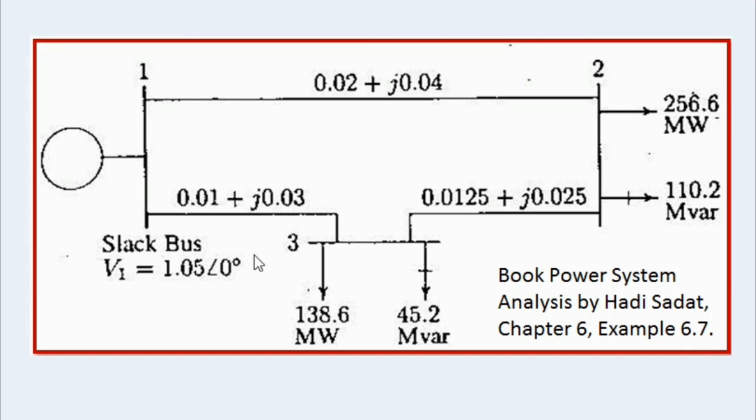I have considered a simple system consisting of three buses as shown in the figure. This example is taken from the book Power System Analysis by Hadi Sadat, Chapter 6, Example 6.7. You can see in this example, the impedances for the buses are given as shown in the figure.